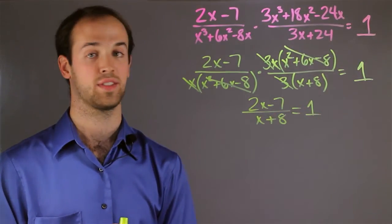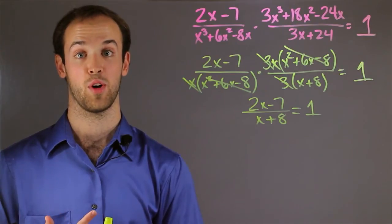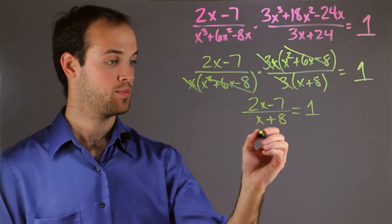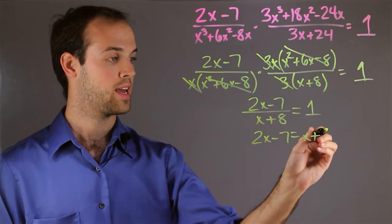But I know that if something is divided by something else and it equals 1, then I know that those two somethings must equal each other. So I have 2x minus 7 is equal to x plus 8.